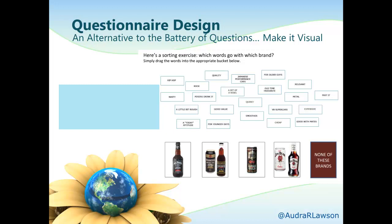As an alternative to batteries of questions, think about making it visual. For example, a matching exercise where you have brands on one side and descriptive words on the other, and respondents draw lines or number the responses. This wouldn't work well on the phone because it's visual, but the basic idea is that you get folks to answer the same kinds of questions they would in giant batteries, while this kind of setup has three advantages over batteries.